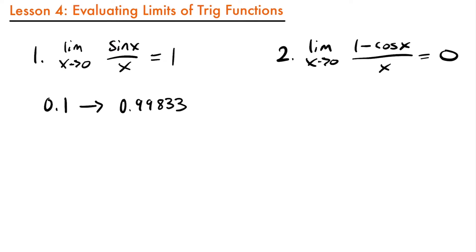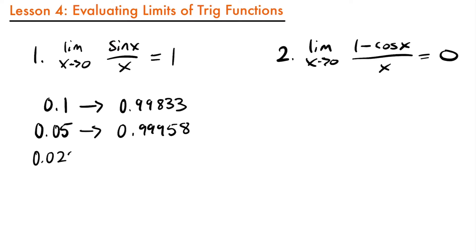Similarly, if we plug in 0.05 — which is half of what we put in before, so we're getting closer to 0 — we find that our value is 0.99958. And then if we plug in 0.025, which is even closer to 0, we took another half of the last value, we find that we're at 0.99989.